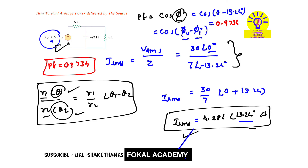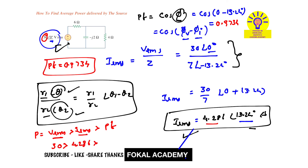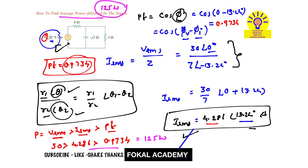Now we calculate the average power delivered by the source. P equals V RMS times I RMS times power factor. V RMS amplitude is 30, I RMS amplitude is 4.286, and power factor is 0.9734. By simplifying this, we get 125 watts. The average power delivered by the source is 125 watts, which is the required answer.